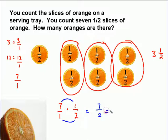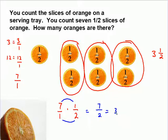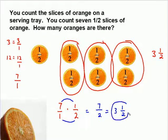And then we can convert that to a mixed number. Two goes into seven three times. Two times three is six. That means we have one left over — three and one-half — which gives us our answer.